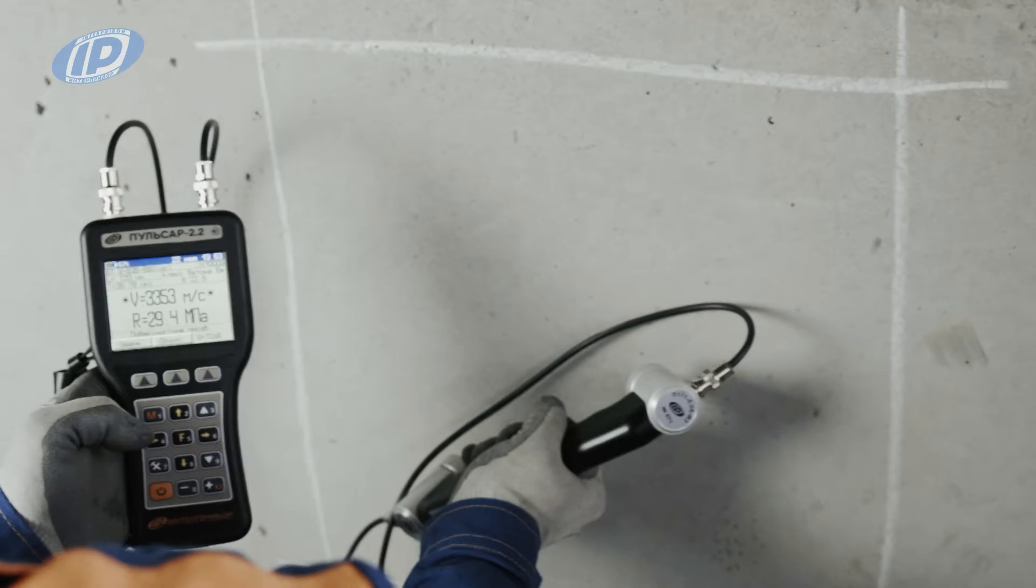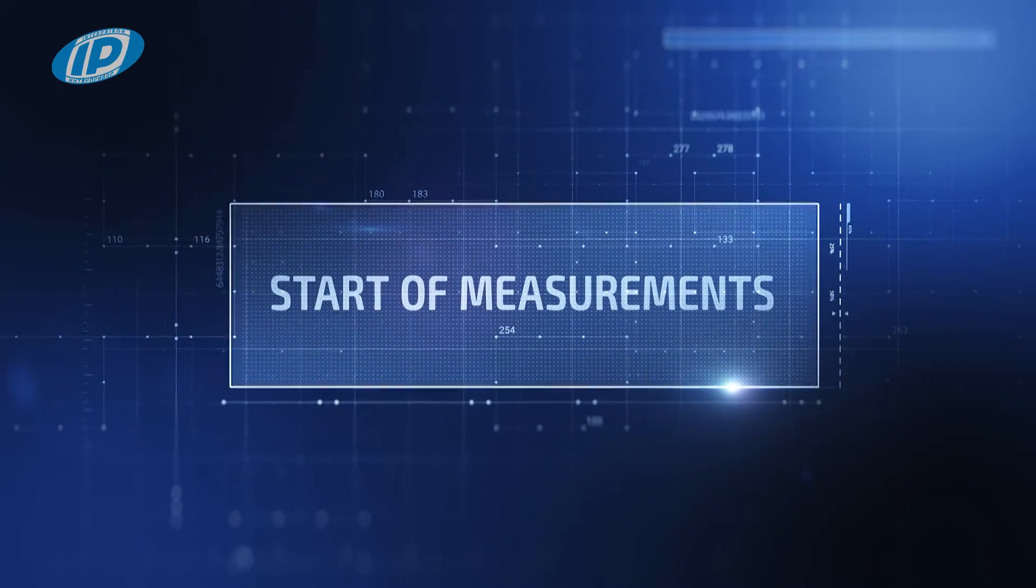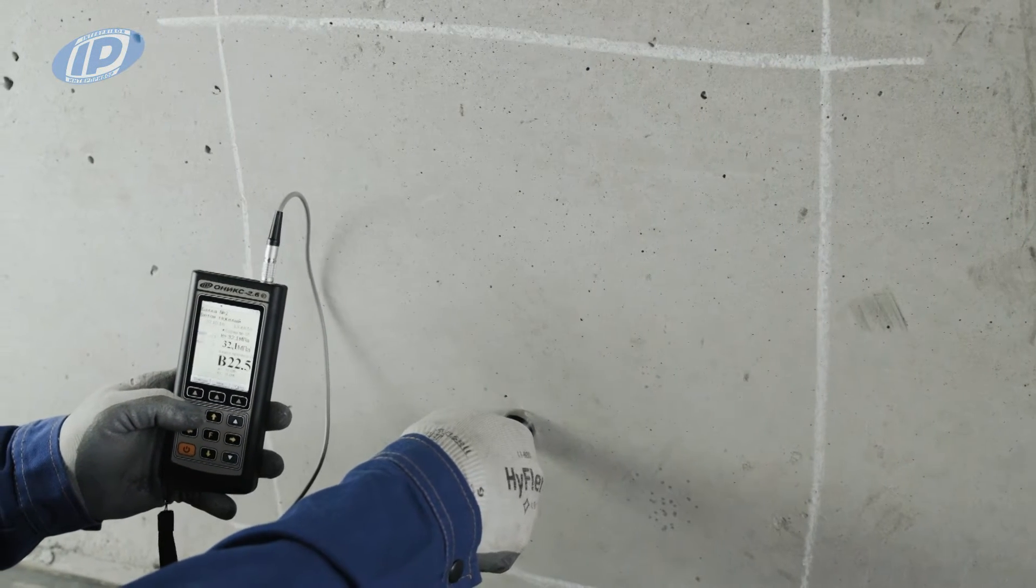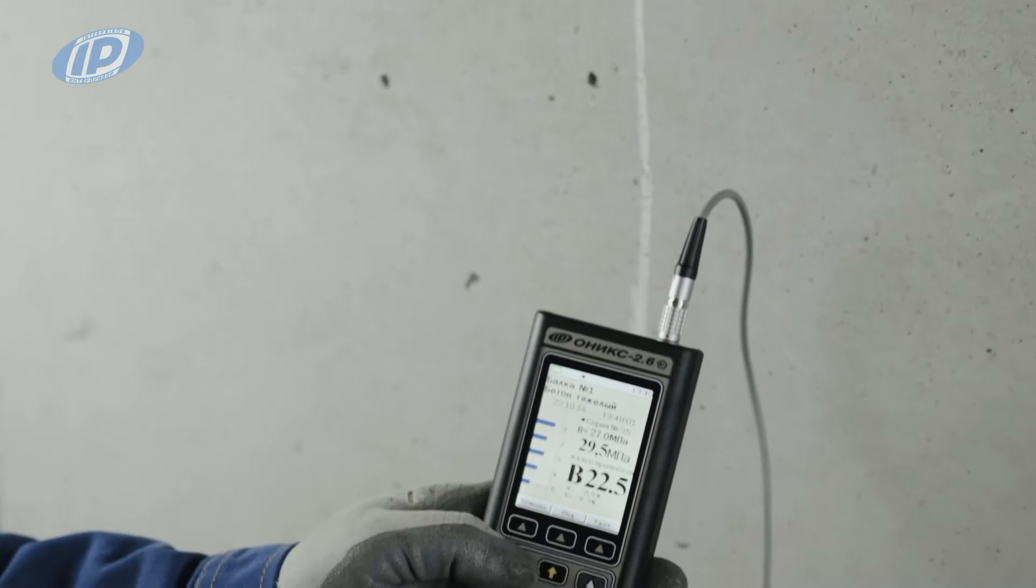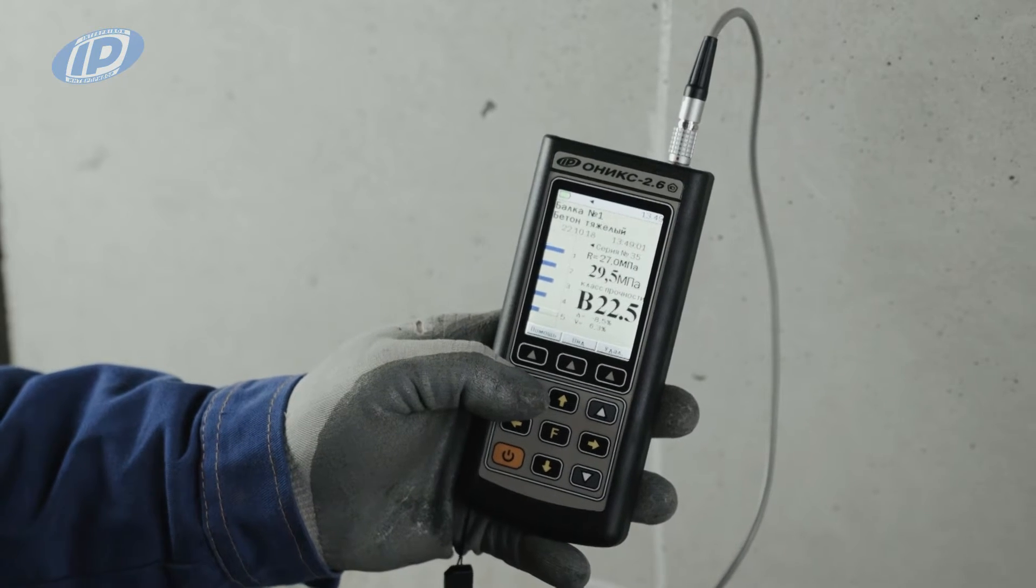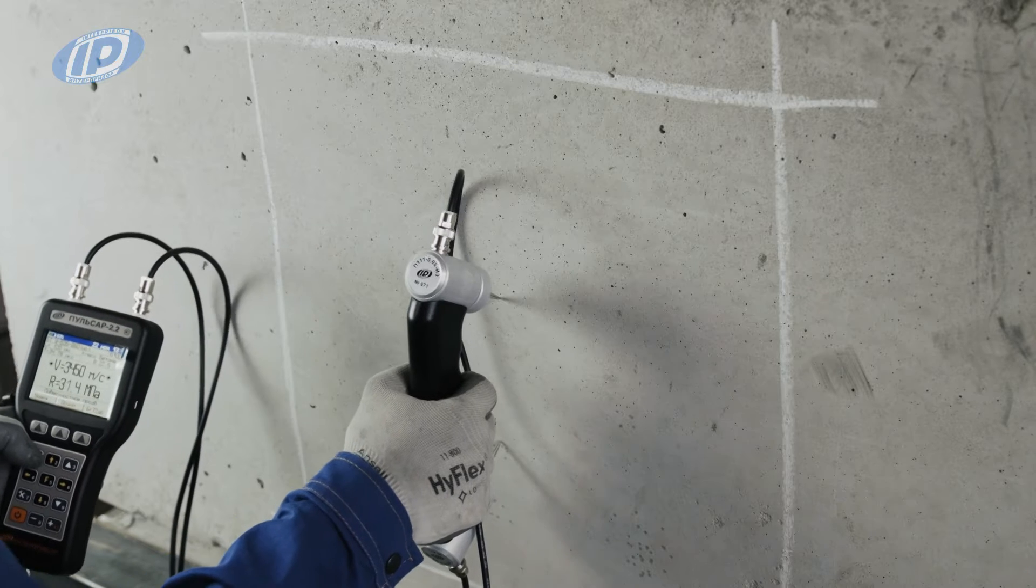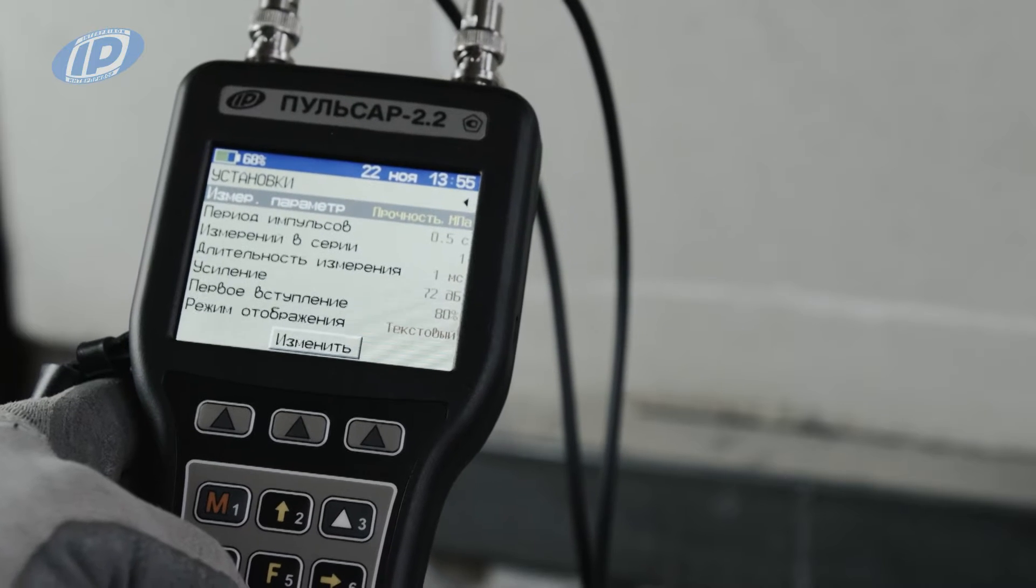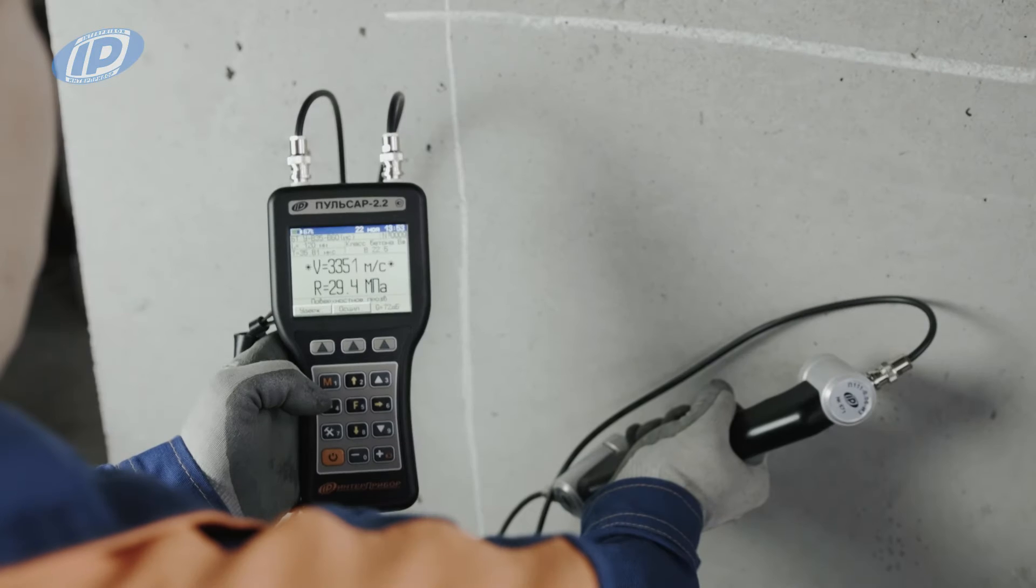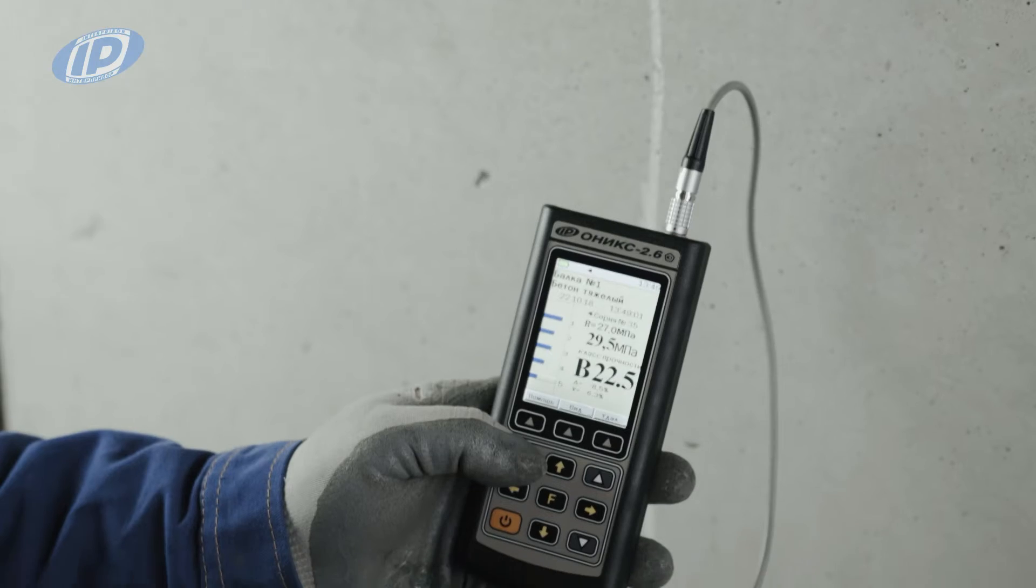Start of measurements: make a series of impacts using the sclerometer sensor of the Onyx 2.6 and then save the obtained average result in the memory of the instrument. Similarly, make a series of tests using the ultrasonic instrument Pulse R22. Before these tests, set up the parameters necessary for such measurements. Then the obtained information can be used to calculate adjusted calibration characteristics.